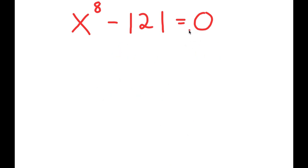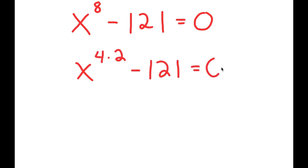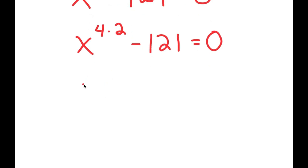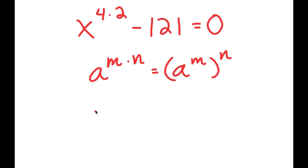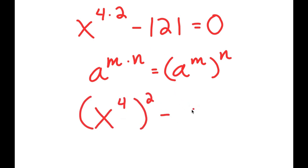Our first step is to rewrite x to the power of 8 as x to the power of 4 times 2. If I have something in the form a to the power of m times n, this equals a to the power of m to the power of n. So x to the power of 4 times 2 equals x to the power of 4 to the power of 2. Now I have minus 121, which we can rewrite as 11 to the power of 2.